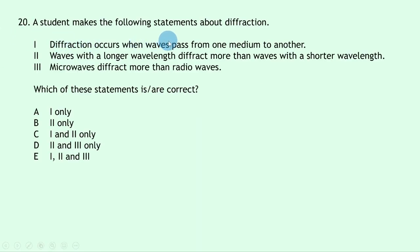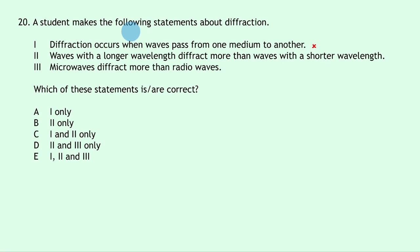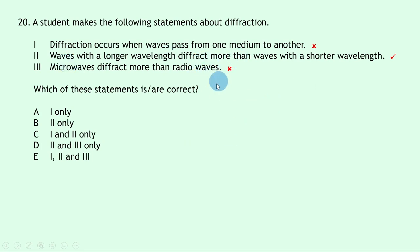Question 20: three statements about diffraction. Statement 1 — diffraction occurs when waves pass from one medium to another: false, that describes refraction; diffraction is the bending of waves through a gap or around an obstacle. Statement 2 — waves with longer wavelength diffract more: true. Statement 3 — microwaves diffract more than radio waves: false, radio waves have the longest wavelength in the EM spectrum and diffract more. Only statement 2 is correct — answer B.